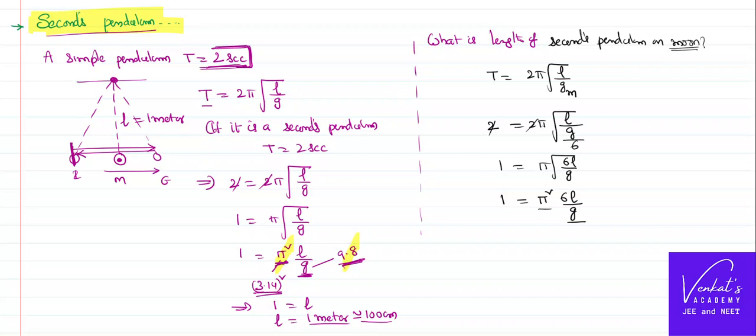If g is 9.8 and π² as I told you earlier are close to 9.8, both of them will get cancelled. So l becomes approximately 1 by 6 meters or 100 by 6 centimeter. So be careful.